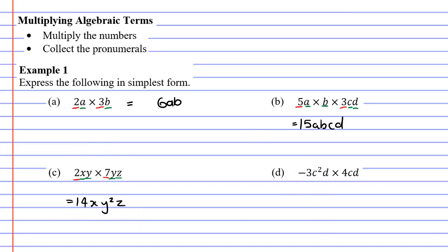Now moving on to question D. This time we've got a negative number - negative 3 as well as positive 4. 3 times 4 is 12, and because of the negative, we need to put a negative in front to get -12.